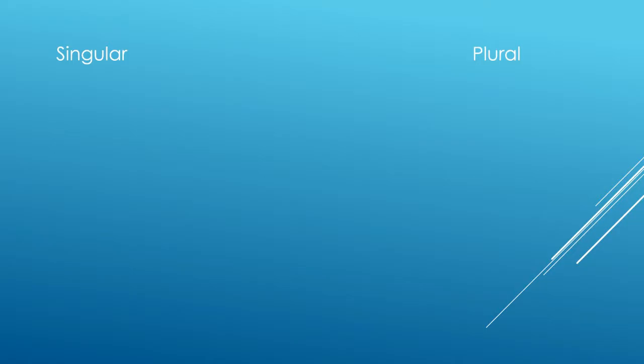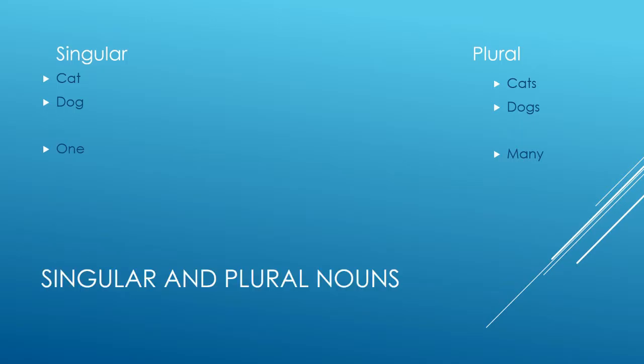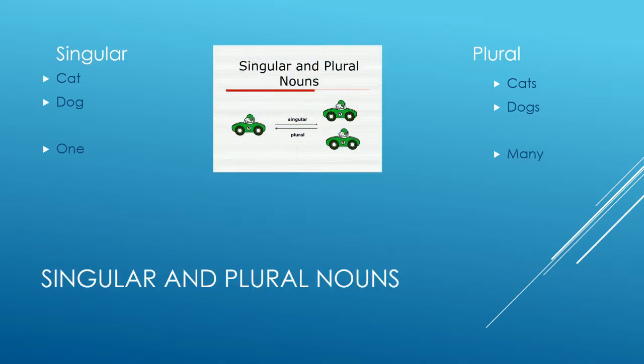Nouns can also be singular or plural. Singular nouns means that you are only talking about one person, place, thing, or idea. A plural noun means that you are talking about many or a lot of a person, place, thing, or idea.